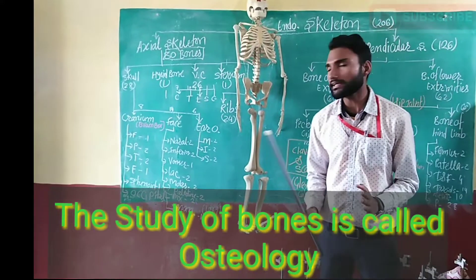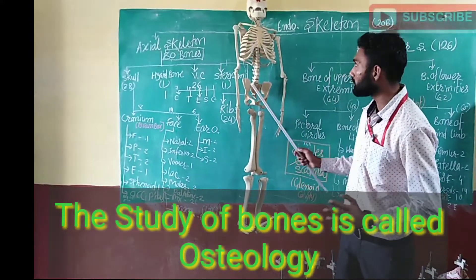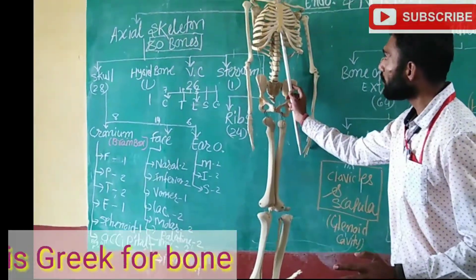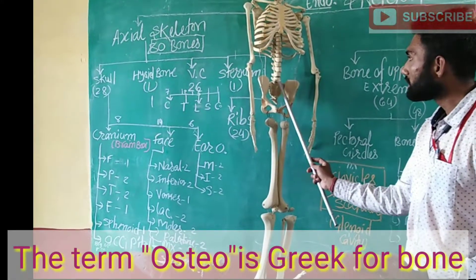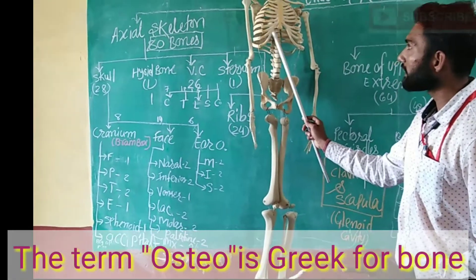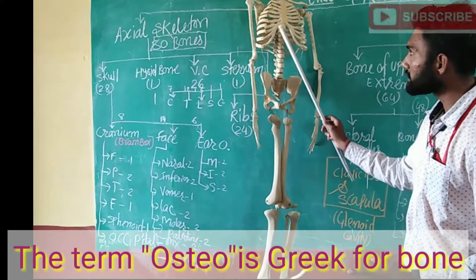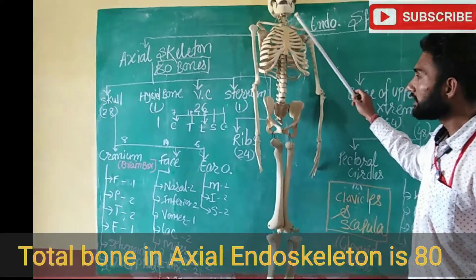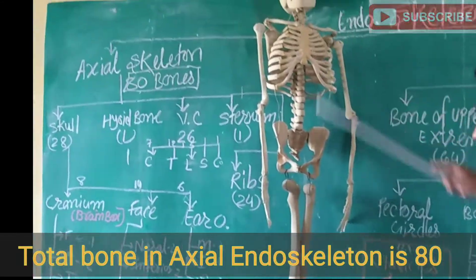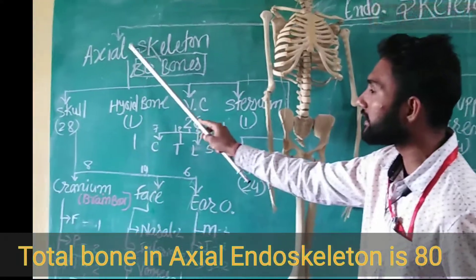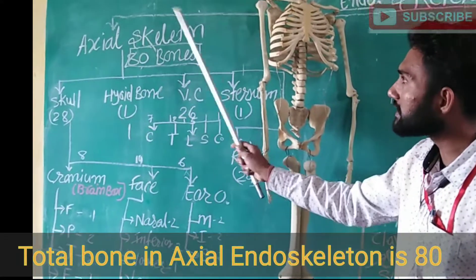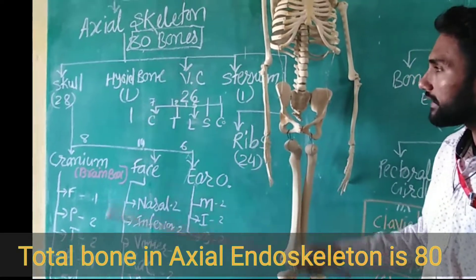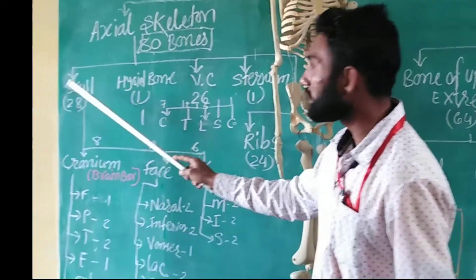Today we will study the endoskeleton. The endoskeleton has a total of 206 bones. How many categories has it been divided into? Our endoskeleton is divided into two categories. One is the center, which includes the brain, spinal cord, and ribs — this is called the axial skeleton. The axial skeleton has a total of 80 bones.